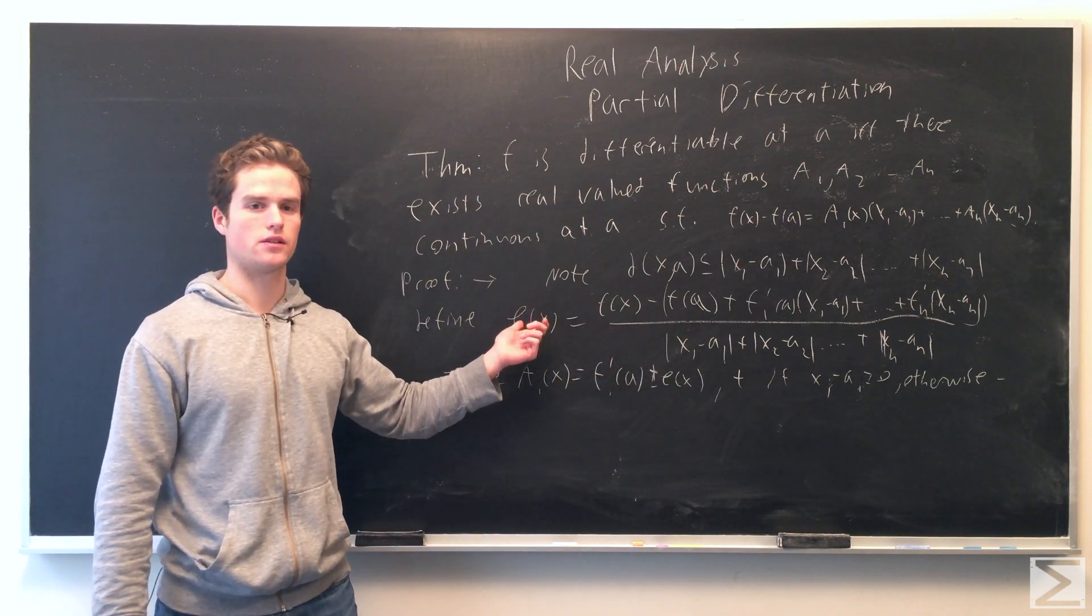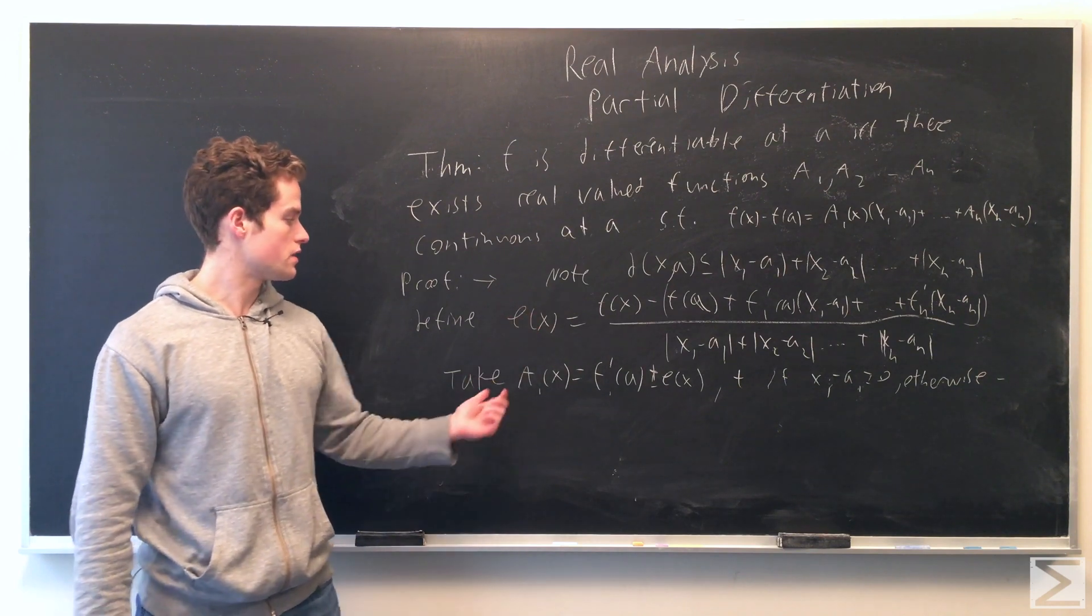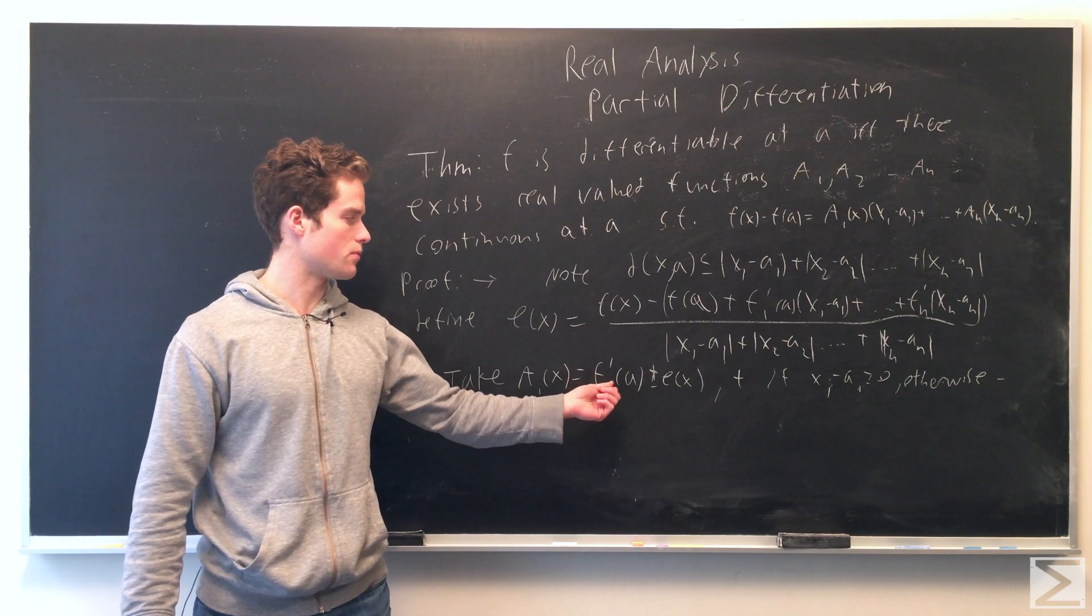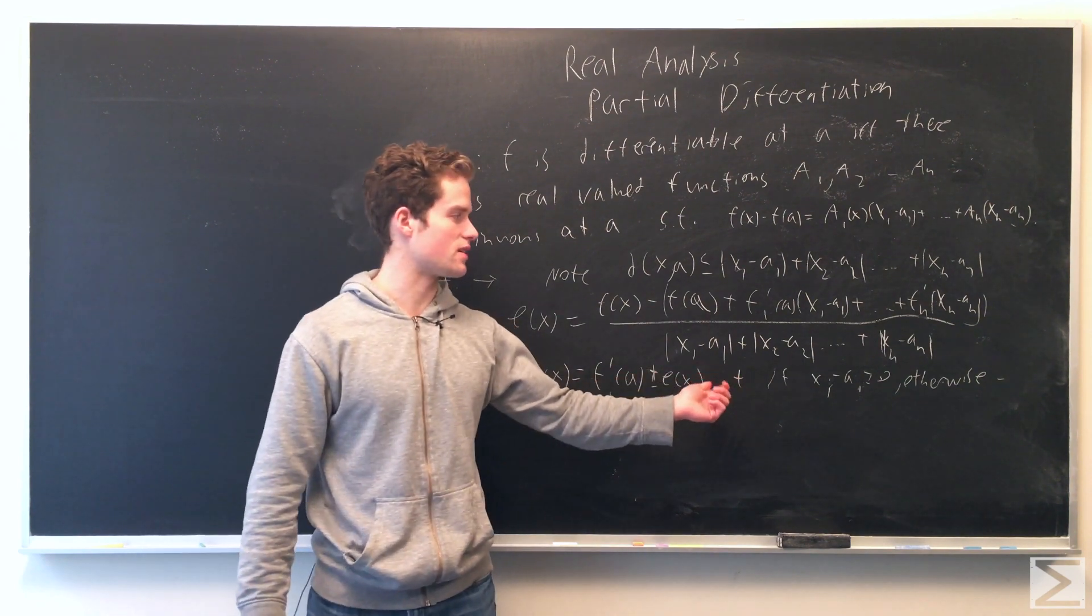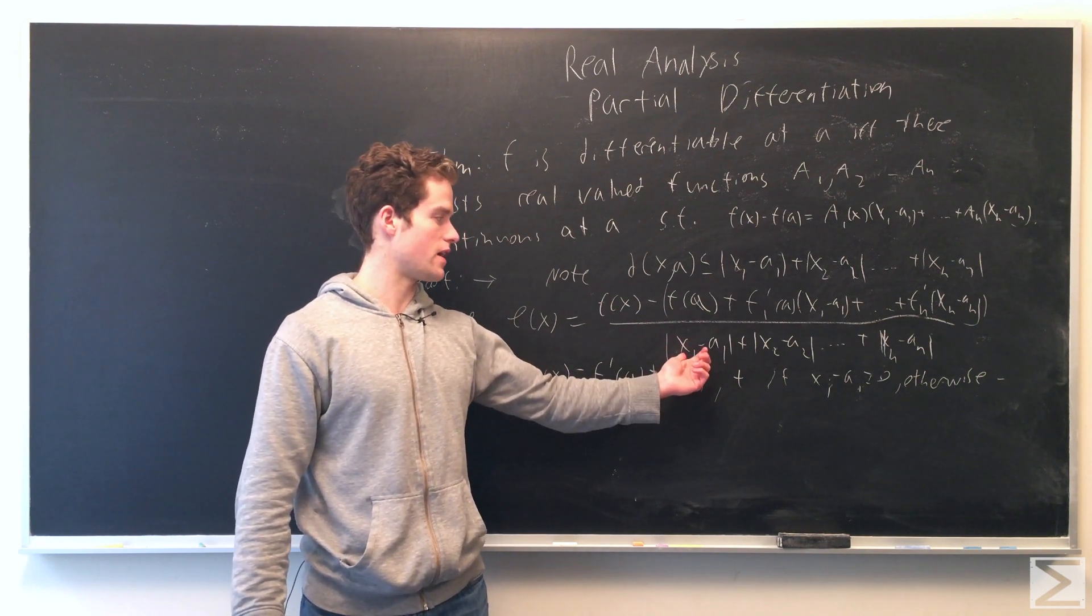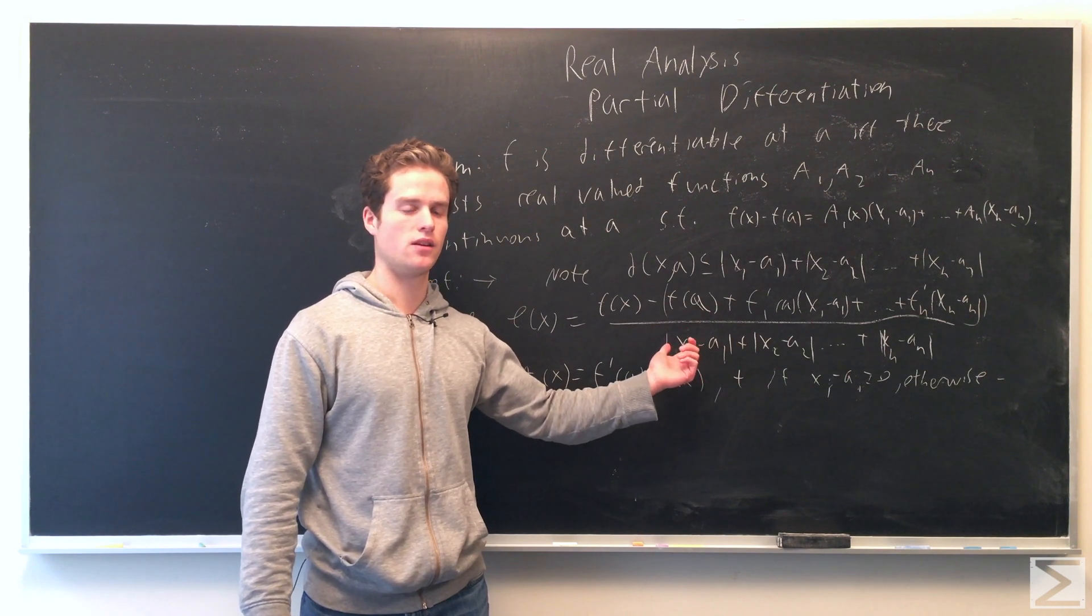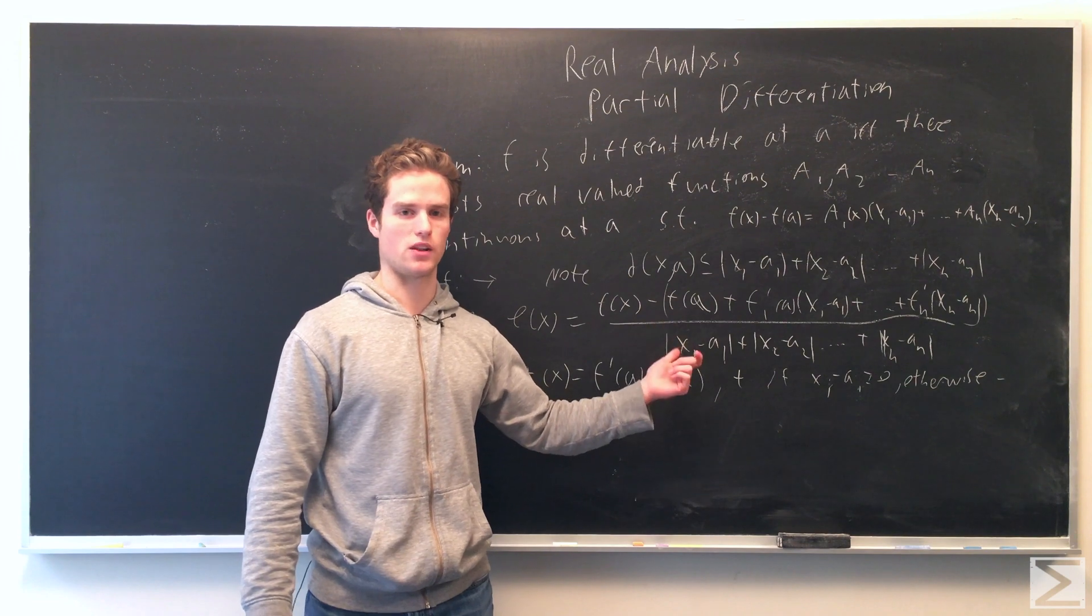If we define a_i(x) equals f'_i(a) plus or minus e(x), where plus if x_i - a_i is greater than 0, minus otherwise. This represents the sign we're multiplying the absolute value of x_i - a_i by, or what we're multiplying x_i - a_i by to get its absolute value.